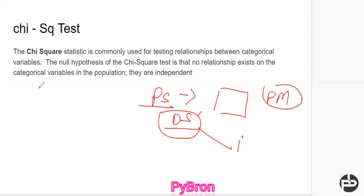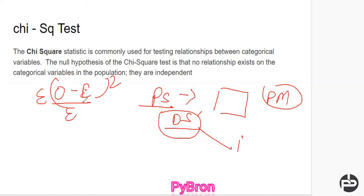So basically, Chi-Square testing — how it works — the formula is: summation of (observed value minus expected value) squared, divided by expected value. I'll show you with one example and one problem statement to clear this doubt. Everything will be the same as Chi-Square testing. Just as we used a Z-table for Z-testing, here we will also use a Chi-Square table.